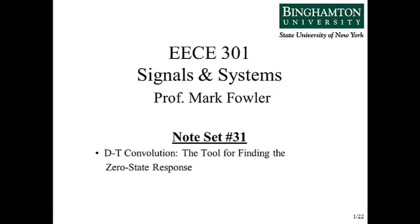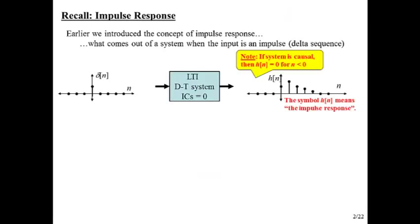Welcome to note set number 31, where we'll be talking about discrete time convolution, which is a new tool for finding the zero state response. Zero state response is what we've been finding all along with all the methods we've been using so far. Soon we'll be finding the part that includes the effect of the initial conditions, but so far in this course we've just been assuming initial conditions are set to zero.